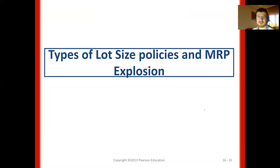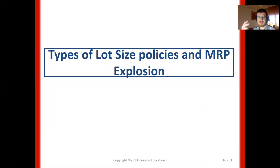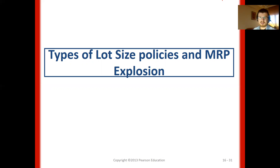In summary, up to now we have talked about bill of materials, master production scheduling, and the concept of dependent demand. The three critical inputs for MRP are: up-to-date inventory records, master production scheduling synchronized with sales and operations planning, and bill of material information. In the next lecture, I will be talking about lot size policies and MRP explosion. Have a nice day. Thanks.